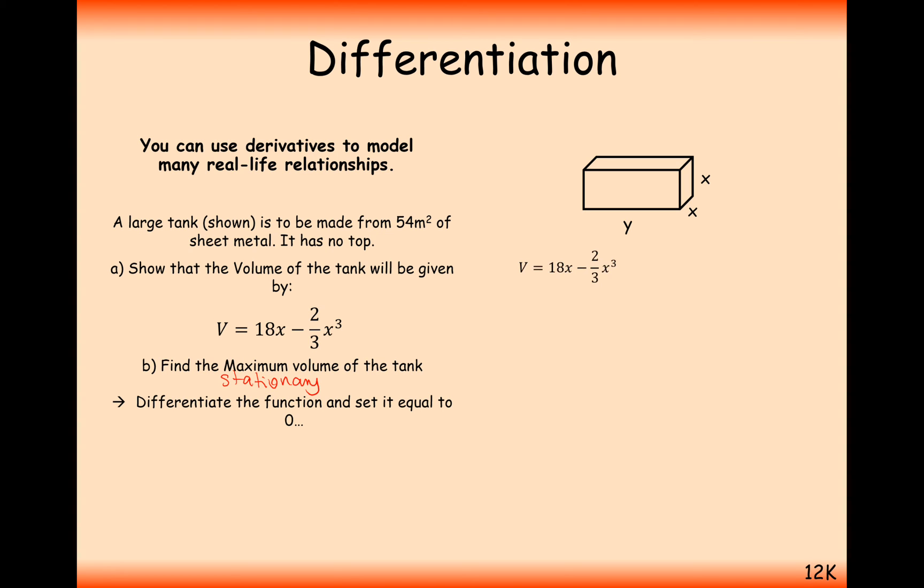So what we have to do here to find a stationary point, remember, is to differentiate and set that equal to 0. So it's 18 minus 2x squared equals 0. Rearrange this, divide through by 2, and square root your answer, and you get x is positive or negative 3. Let's just take the positive version here as x is the length of a side. So x is equal to 3.